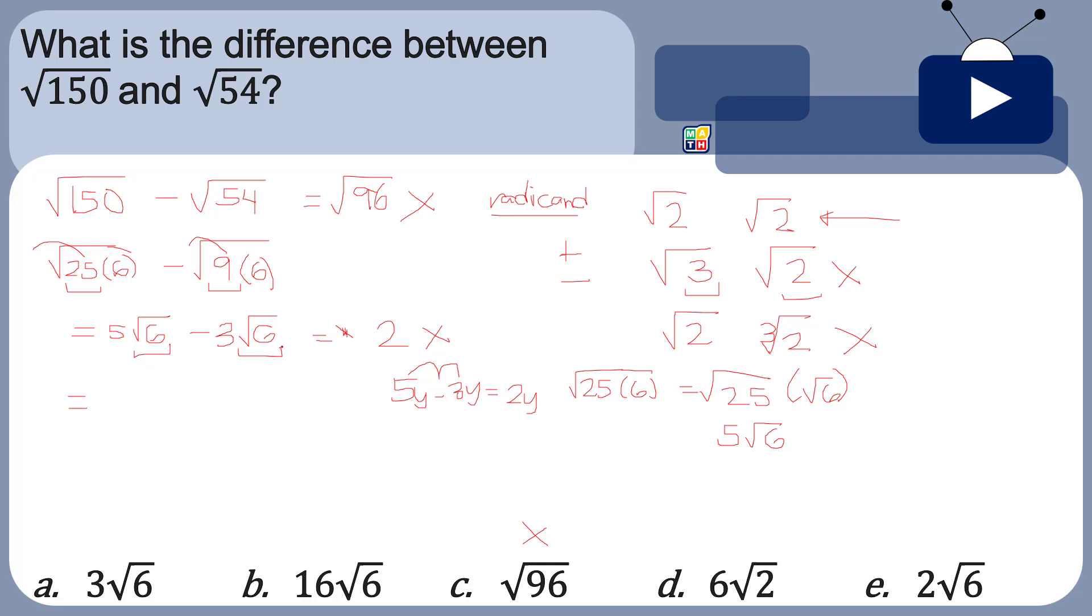Once we have the same radicand, 5 minus 3 is 2, and similar to this, copy square root of 6. In short, the answer is 2 square root of 6, and that is actually letter E.